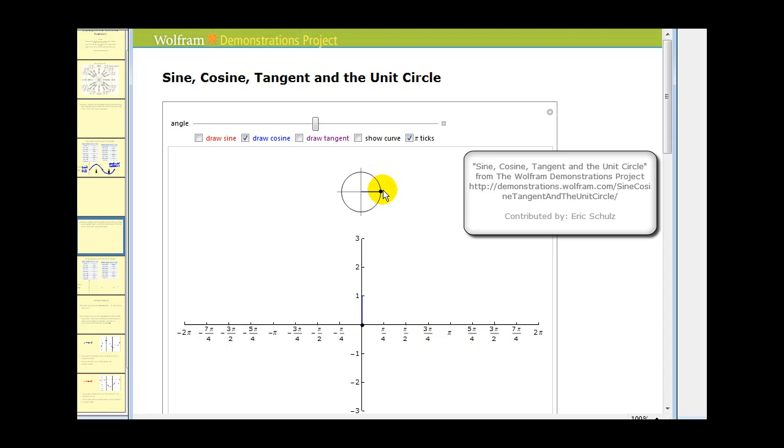So at zero degrees, the x-coordinate is equal to positive one. At pi over two radians or 90 degrees, it's equal to zero. At pi it's equal to negative one. At three pi over two, or 270 degrees, we're at zero. And then at two pi, we're back at positive one. So this is a different graph than sine theta. This is cosine theta.